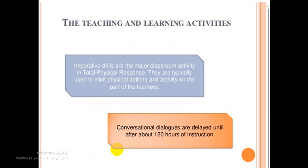What are the types of teaching and learning activities according to total physical response? Imperative drills are the major classroom activity because they are typically used to elicit physical actions and activity on the part of learners. Conversational dialogues are delayed until after about 120 hours of instruction. Other activities include using objects, realia, role plays, slide presentations, storytelling, games, and imperative exercises.